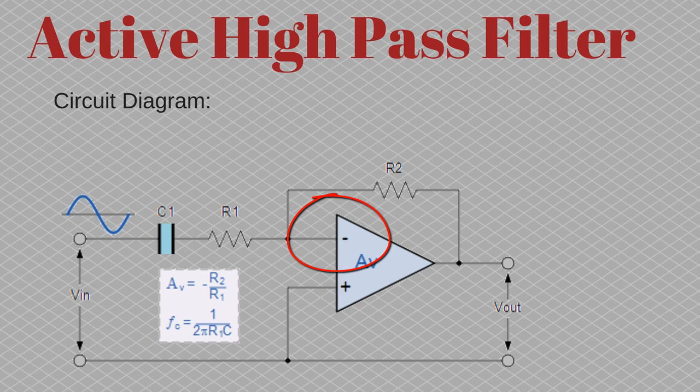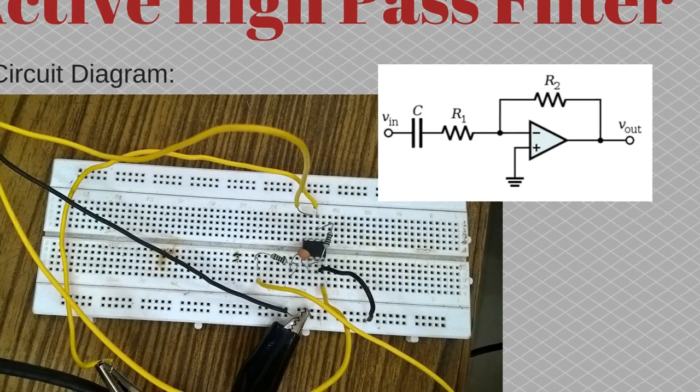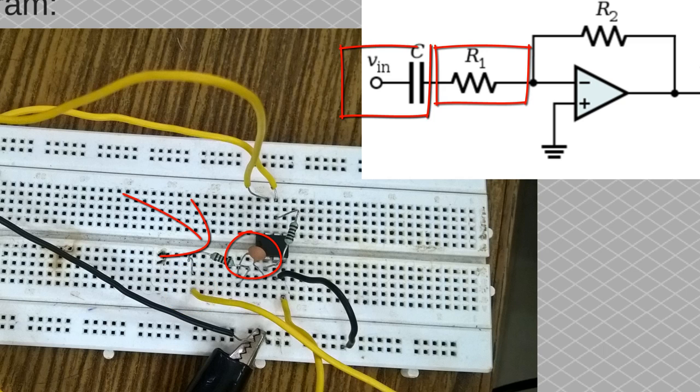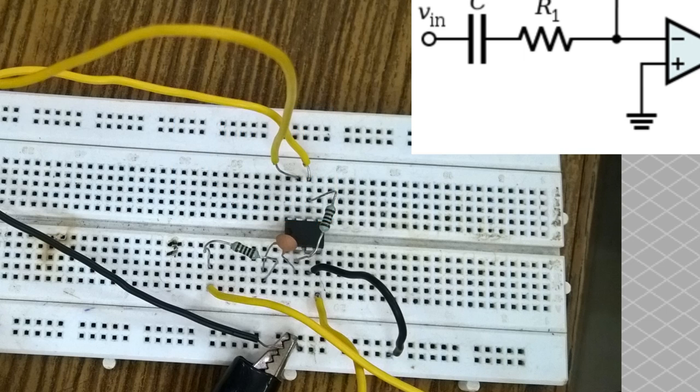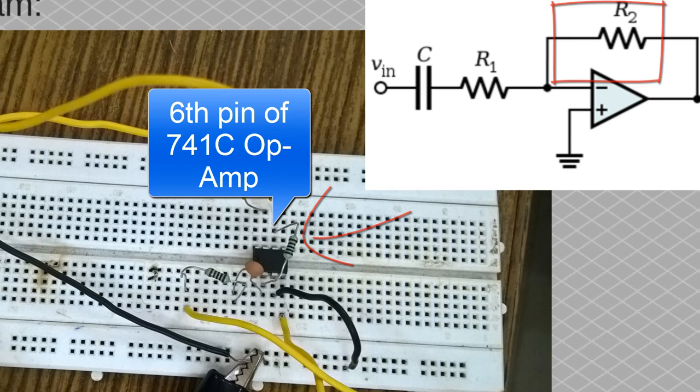This is the actual circuit that I made for my active high pass filter. As you can see, here is my input signal right here, and then there is this resistance R1, then the capacitance C going into the second pin of this operational amplifier IC. I'm using the 741C operational amplifier IC right here, whose second pin is for the inverting terminal. Then there is another resistance R2 going from the second pin to the sixth pin of this 741C operational amplifier IC.